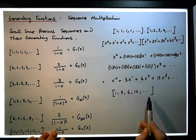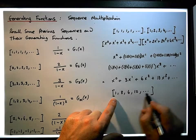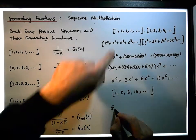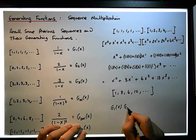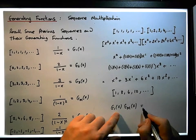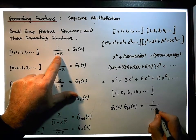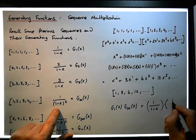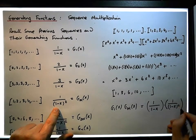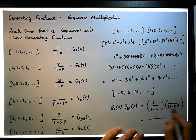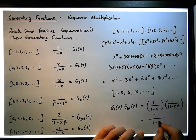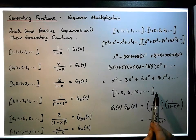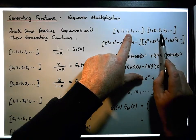Now that we have this sequence, what is its generating function? It must be g₁(x) times the natural numbers generating function. g₁(x) is 1/(1−x), multiplied by the generating function of the natural numbers, which is 1/(1−x)². This gives us 1/(1−x)³ as the generating function for this new sequence, which is the result of the product of the two previous sequences.